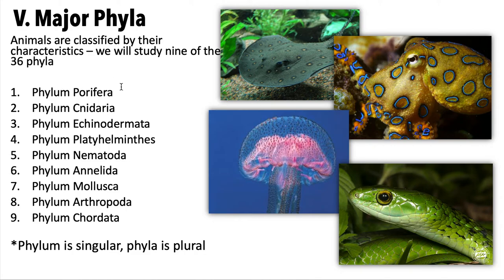The nine phyla are: Porifera, Cnidaria, Echinodermata, Platyhelminthes, Nematoda, Annelida, Mollusca, Arthropoda, and Chordata. Note that 'phylum' is the singular term; the plural is 'phyla,' though you'll probably hear 'phylums' used informally as well.